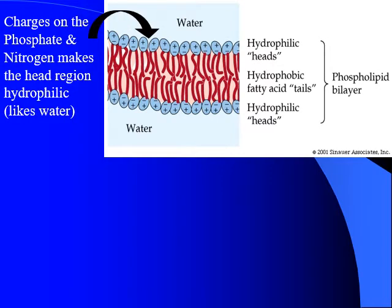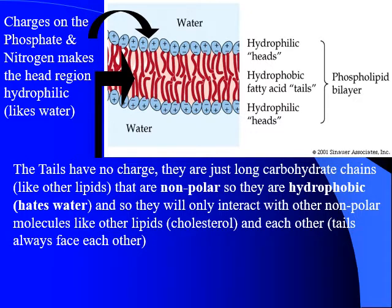These charges on the phosphate group, specifically the nitrogen and the oxygen, make them hydrophilic, meaning they like water. The tails have no charge, so they hate water — they don't like interacting with water. They're hydrophobic, and so they only interact with other non-polar things like lipids, cholesterol, and other non-polar items like other fatty acid chains. If you're going to get one diagram copied down into your notes, I strongly recommend it's this diagram with all these labels here.